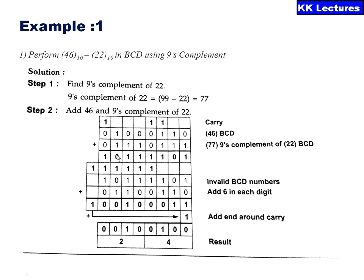Since both four-bit groups are invalid BCD codes, I need to add 6 to each group. Adding 0110 to each: working through the bits, the carries generated are added back to the result. The final carry of 1 is added in as well, giving the resultant digits 2 and 4 — that is 24. So when I subtract 46 minus 22, the resultant is 24, which is correct.